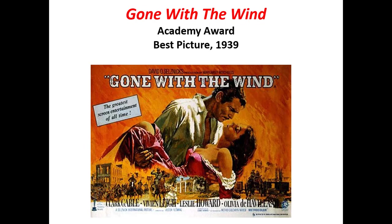Gone with the Wind defended the Confederacy, condemned Reconstruction, and supported the disenfranchisement and segregation of black people. Disenfranchisement means depriving someone of the right to vote. This is an example of women with agency — not always positive, but still getting out there and becoming relevant in society, no longer just housewives.